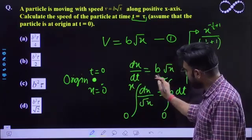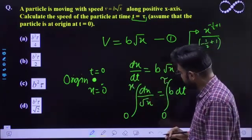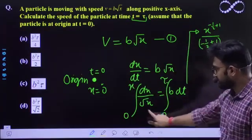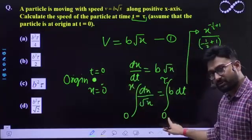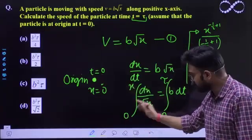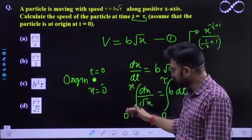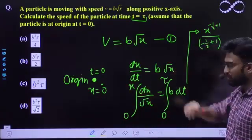Yeh toh chieze humain pata hai, job origin pe tha, job x time zero hota hai, x zero hota hai. Hei na toh this integration would go from zero to x, the time would go from zero to tau.